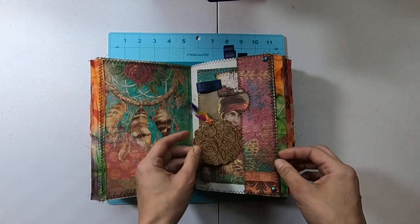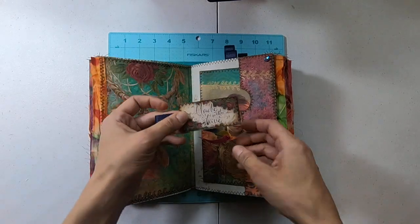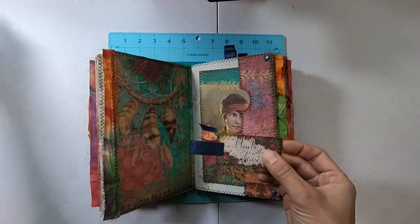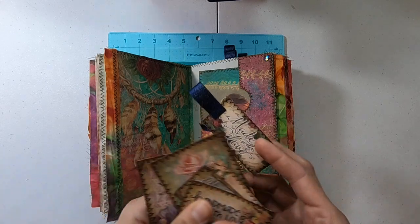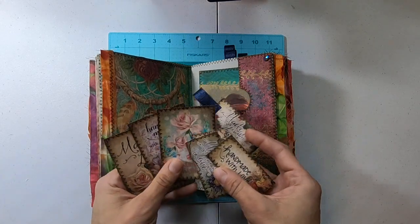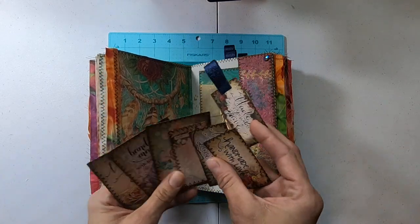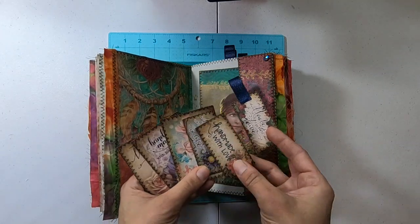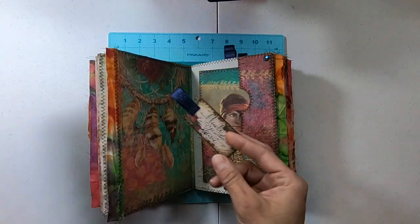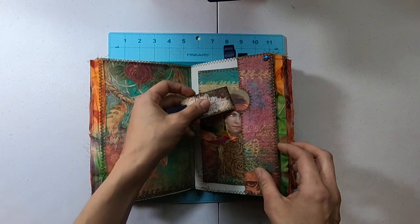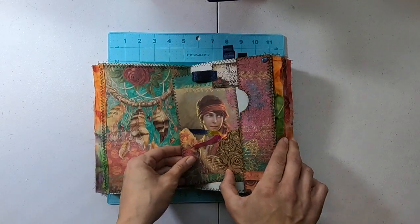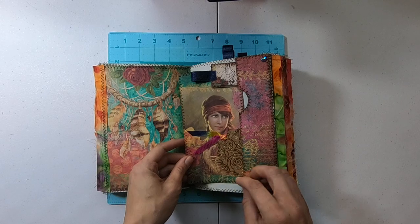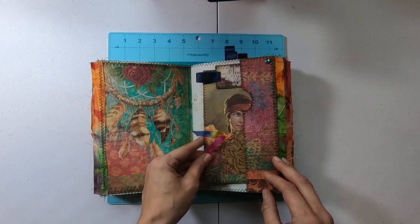So I put this little die cut in and then there's these cool tags are from Calico Collage as well. It's actually a freebie if you go to their website. You can add these to your projects. I've been adding them to everything that I make and then a journaling card, a large one cut from one of the kit pages.